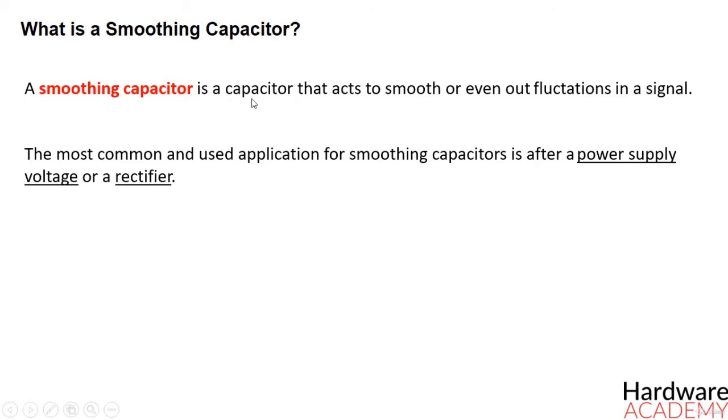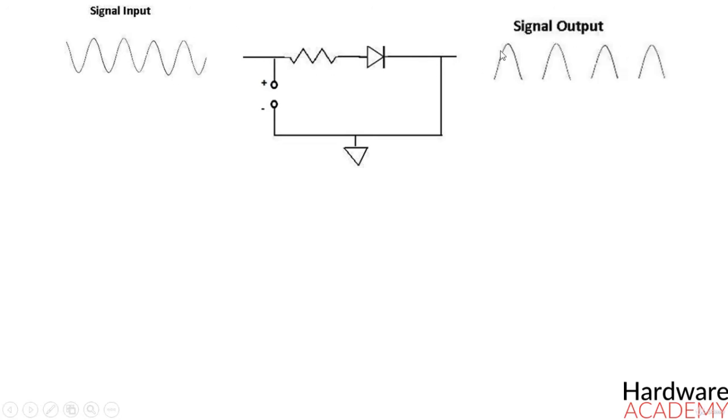We will go over an example of this now. A prime example of when a smoothing capacitor is used is in conjunction with a rectifier circuit. If you place a resistor in series with a diode and then input an AC signal into the circuit, the output signal will look something like this.